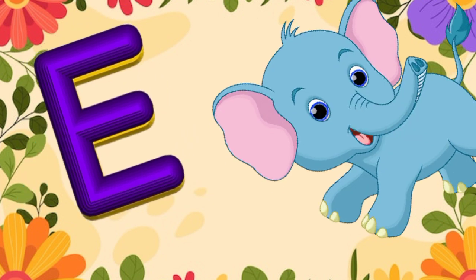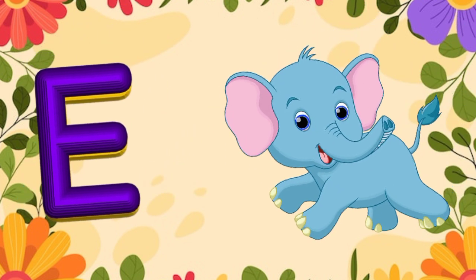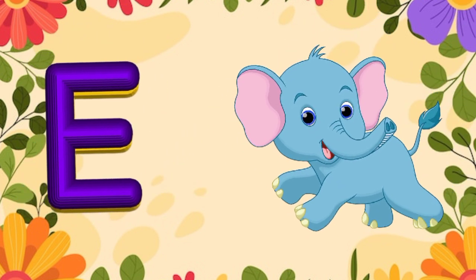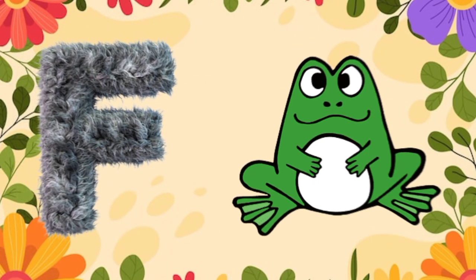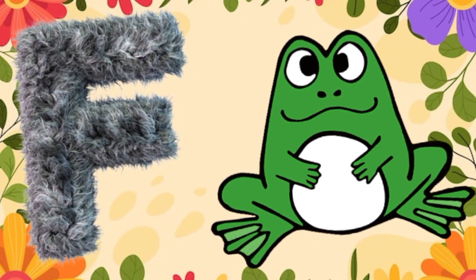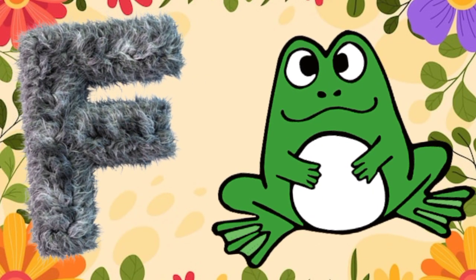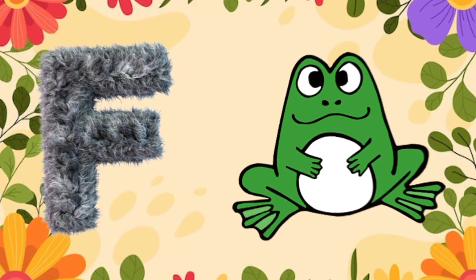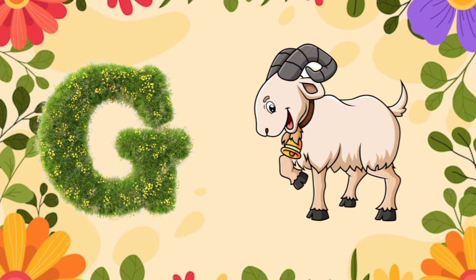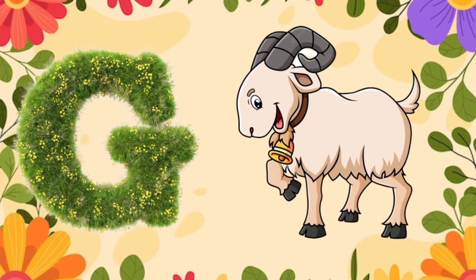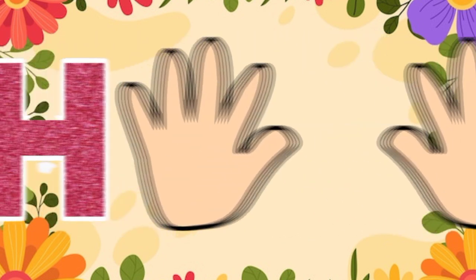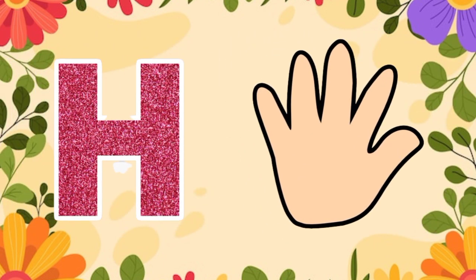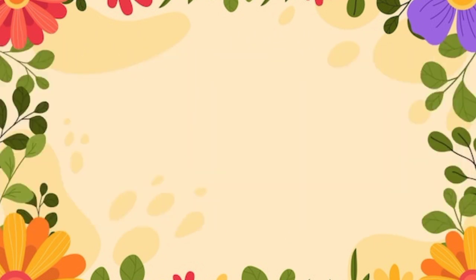E is for elephant, e-e-elephant. F is for frog, f-f-frog. G is for goat, g-g-goat. H is for hand, h-h-hand.